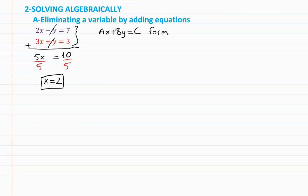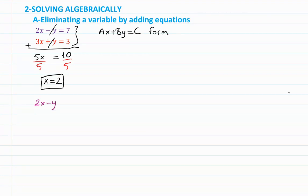Substituting x equals 2 into the purple equation: 2x minus y equals 7 becomes 2 times 2 minus y equals 7, so 4 minus y equals 7.